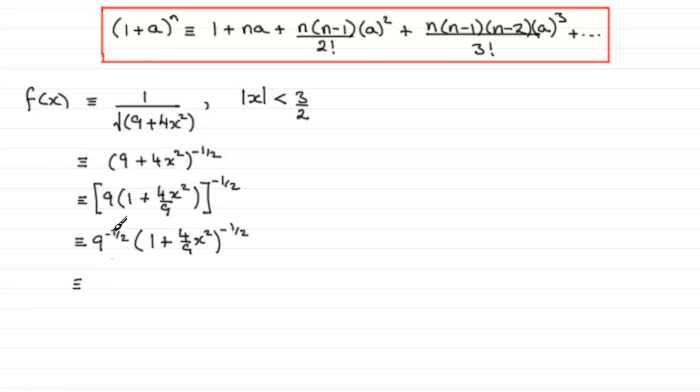Now 9^(-1/2), that's 1 over 9^(1/2), 1 over the square root of 9, which will be 1/3. So we've got a third there for that part. And as for (1 + 4x²/9)^(-1/2), well this is in this format now. We can see that a is going to be the 4x²/9, and n, the power here, is going to be -1/2.